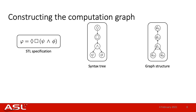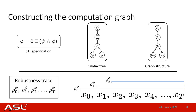Since there are temporal operators involved, we need to pass what we call a robustness trace through this graph structure. A robustness trace is defined as a sequence of robustness values corresponding to each consecutive subsignal. The subscript of rho here corresponds to the time index for which the signal starts, as illustrated on the bottom right.